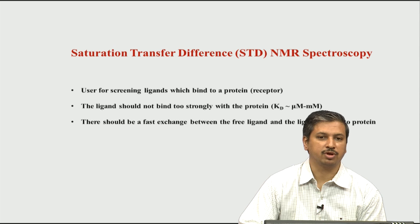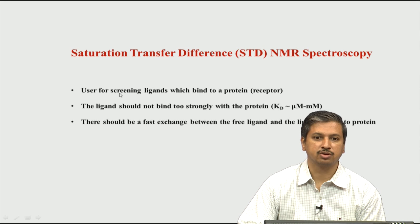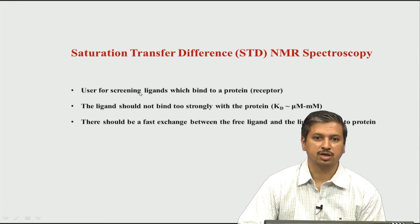Let us say we have a library of 1000 compounds or even a million compounds. The goal is to find out, out of this million compounds, how many of them bind to the protein. That is one reason why we would need to do the STD NMR experiment.